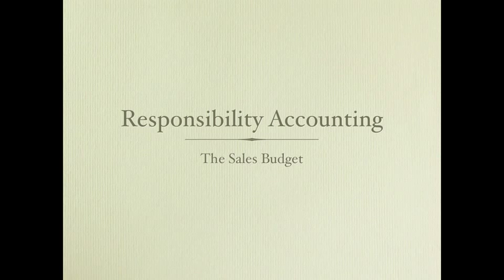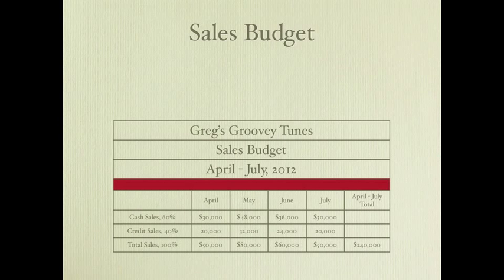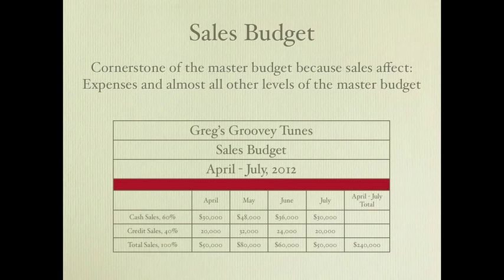This is part two in our Responsibility Accounting series where we're going to be discussing the sales budget. Recalling our prior discussion on the master budget, the sales budget was the first budget you complete in the master budget process because it is the cornerstone of that master budget — it affects so many levels, including expenses and many other areas.